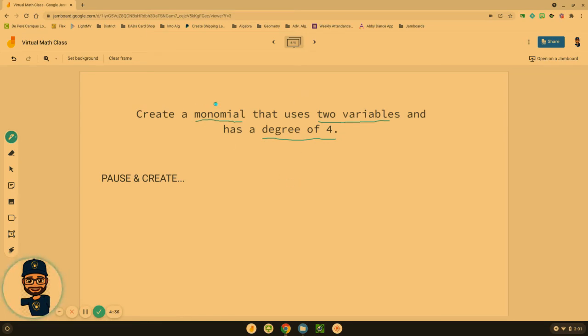I hope you created one. I'm going to try and go through a bunch of different possibilities. A monomial means one term, so we're not going to have any addition or subtraction signs. One term, two variables - I'm just going to list an x and a y, x times y to start out with my two variables, and they need to have a degree of four.